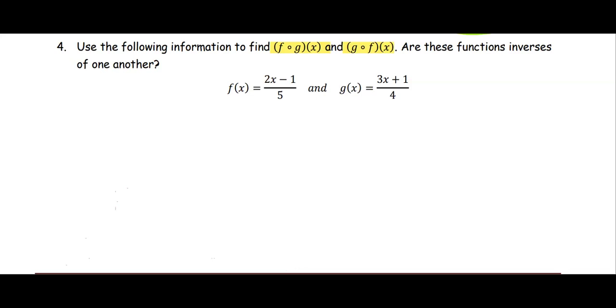Let's look at the first part, which is the composition of f and g, or f of g at x. We treat g as the input, that is 3x plus 1 divided by 4. The input of the function f we multiply by 2 and then minus 1 divided by 5.